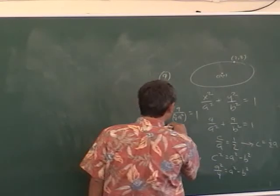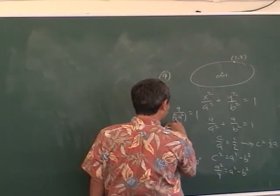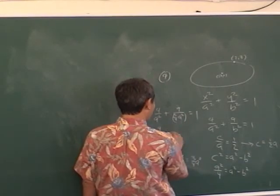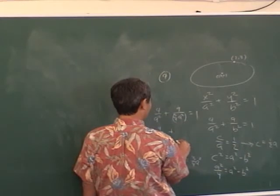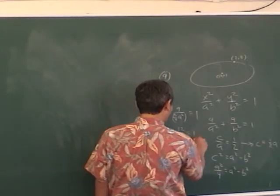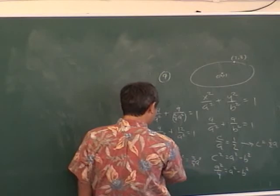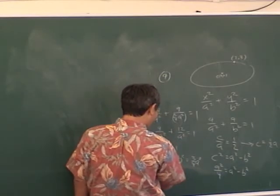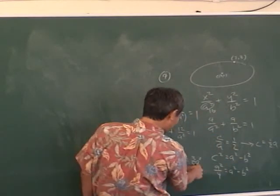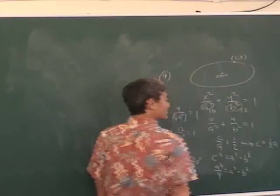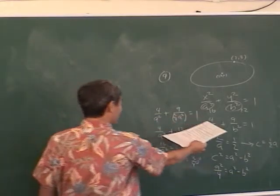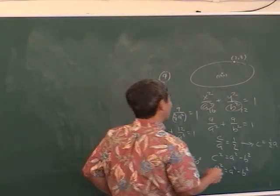Dividing by a fraction is like multiplying by the reciprocal — nine times 4/3 is 12. So 4/a² plus 12/a² equals 1, which is 16/a² equals 1, so a² equals 16. Once you get a², plug back in to find b² — which is (3/4)(16) = 12. So a² is 16 and b² is 12. The hard part is setting up the equations.